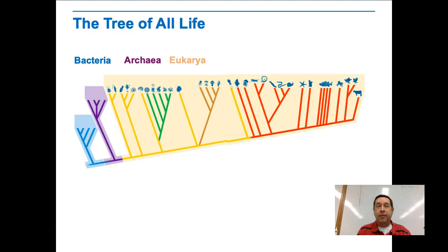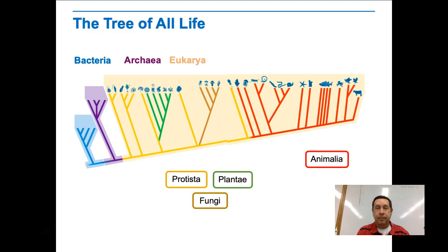Here you can see a simplified version of the tree of life, with bacteria as the earliest species, then archaea, and then all the eukaryotes — the eukarya — including all the different groups: plants, fungi, protists, and animals.